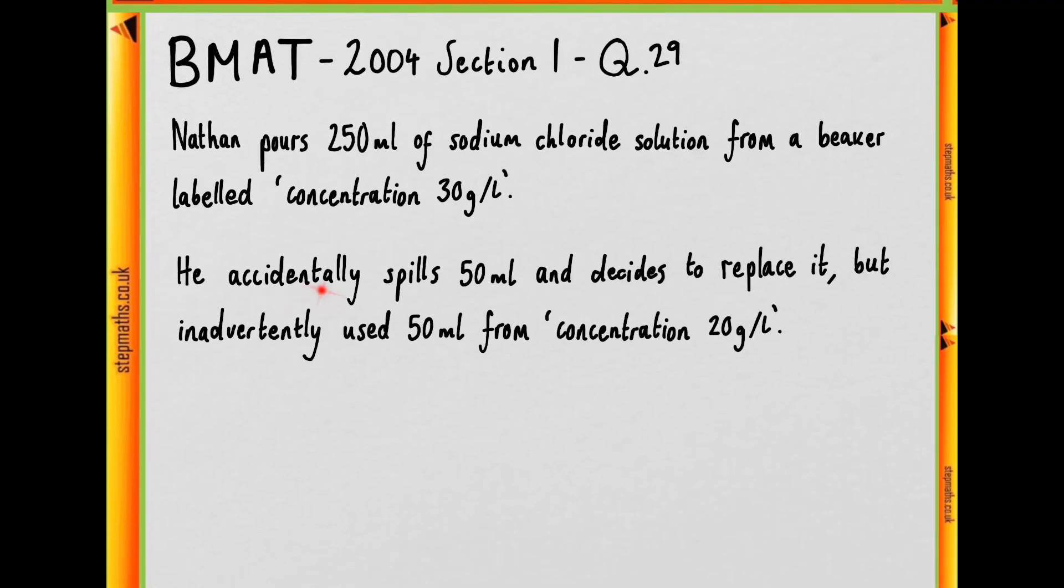We're then told that he accidentally spills 50 ml in the process of pouring this 250 ml into a beaker and decides to replace it, but he inadvertently uses 50 ml from a different bottle labeled concentration 20 grams per litre. So we have two different concentrations present in our beaker.